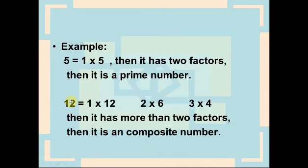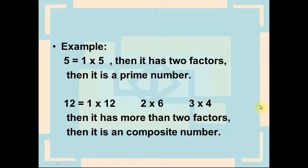12 is a composite number because its factors are 1, 12, 2, 6, 3, and 4. It has more than two factors, so it is a composite number.